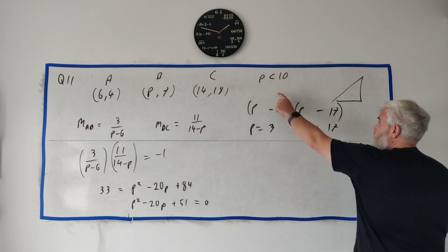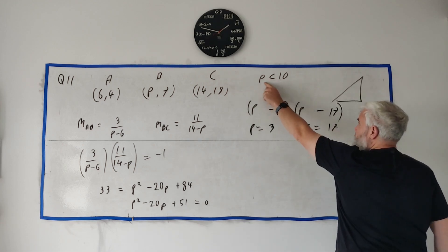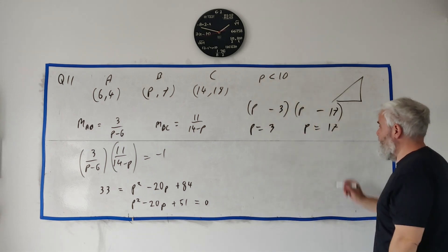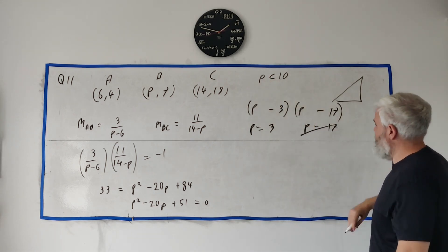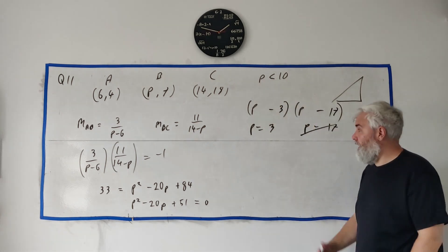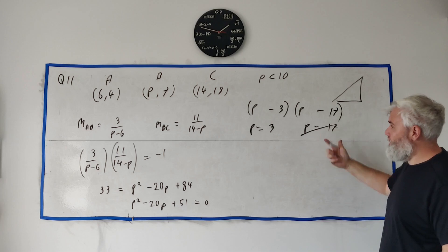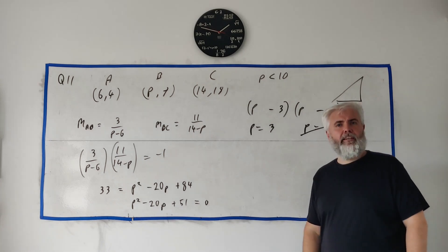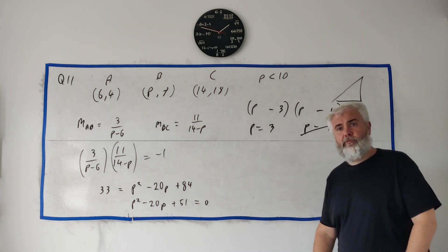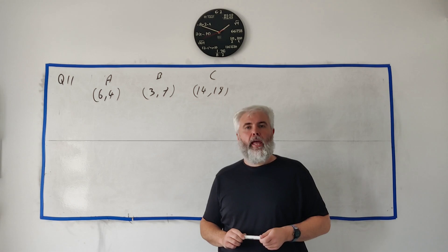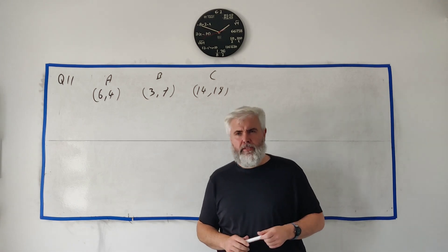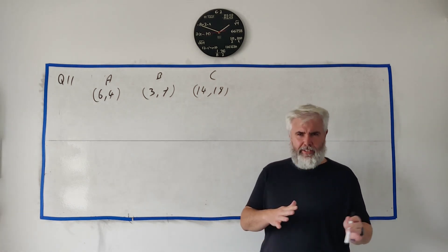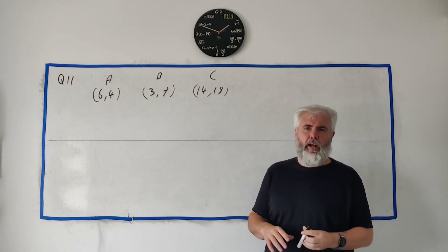Remember the extra clue: p is less than 10. So we cross out p equals 17, and p equals 3 is the answer to part A.